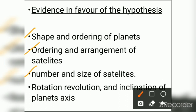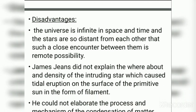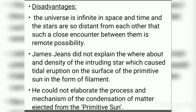Third, regarding the number and size of satellites — a larger number of satellites were formed from bigger planets because bigger planets took a longer time to cool and condense. Fourth, regarding the rotation, revolution, and inclination of planetary axes — the planets revolve around the Sun in the same direction and in the same plane, and similarly, satellites of planets revolve around their planets in the same direction and plane.